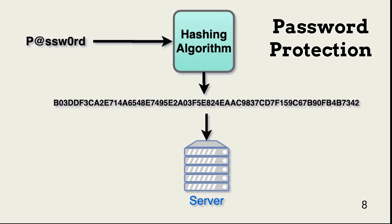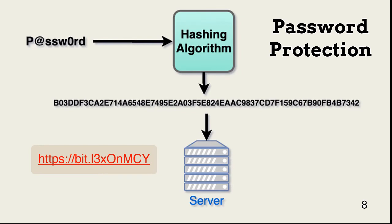Another use for hashes is protection of passwords. In this example, a user enters a new password for an application. The password is hashed with SHA-256 and stored on the application server. The password is never passed in plain text over the network, even during authentication. Instead, authentication with a password includes comparing two hash values: the one for the password entered by the user and the one previously stored on the server.